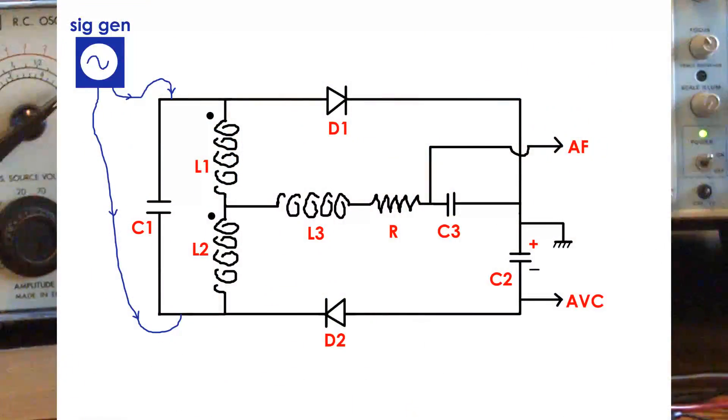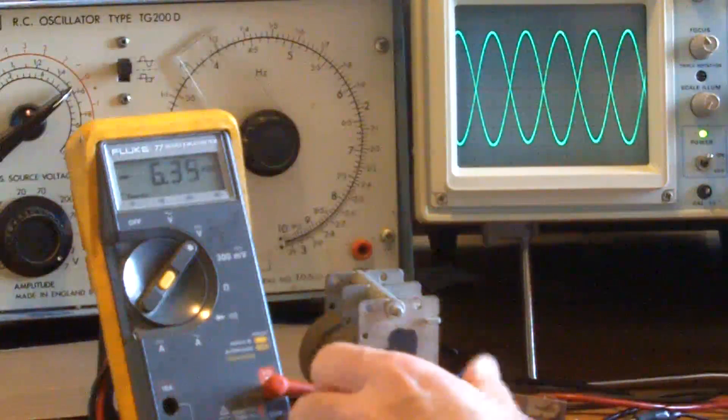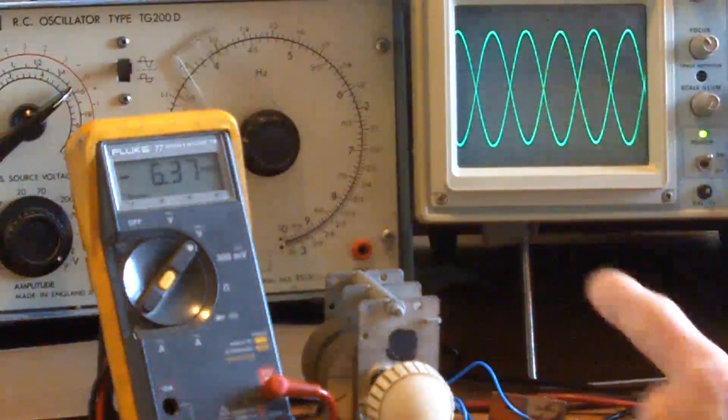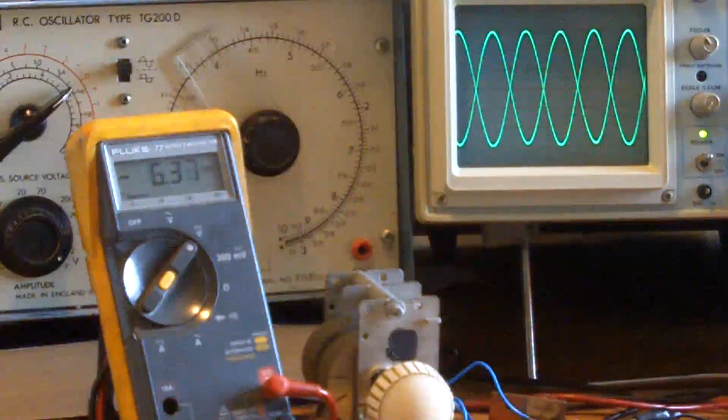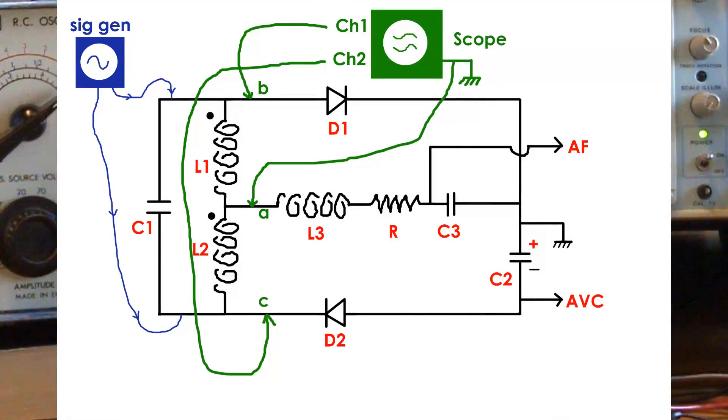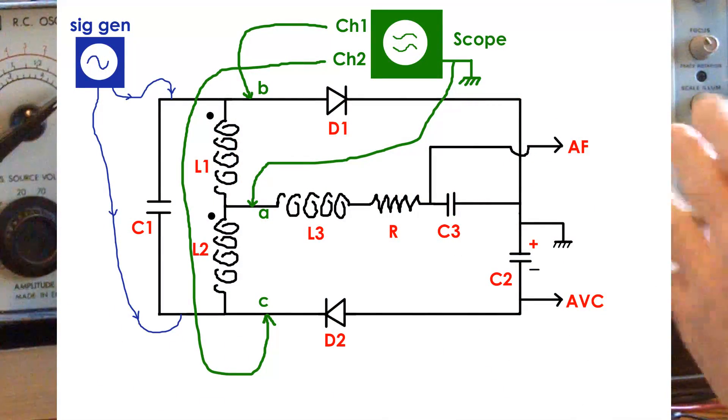And I've tuned the tank circuit to 400 kHz. The oscilloscope is connected to point A for the ground and then B and C for channels 1 and 2 that you're seeing here.